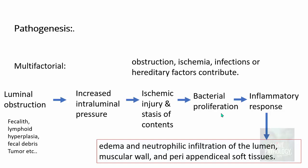Bacterial proliferation results in an inflammatory response, leading to edema and neutrophilic infiltration of the lumen, the muscular wall, and even the peri-appendiceal soft tissues. This is how appendicitis develops in an individual.